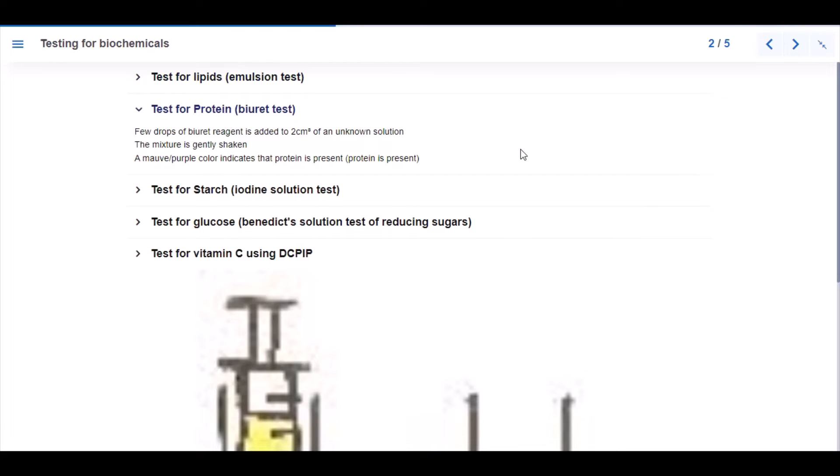Test for protein: a few drops of biuret reagent is added to 2 cm³ of an unknown solution. The mixture is shaken and a mauve or purple color indicates that protein is present.